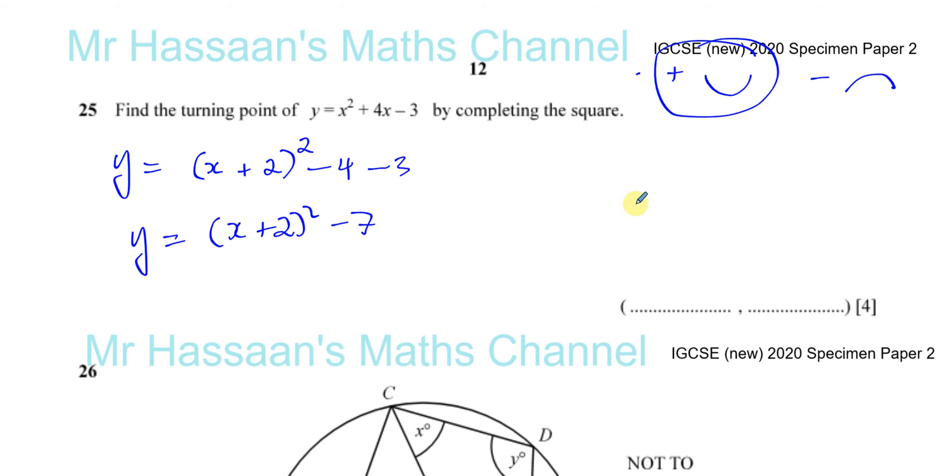It will be the lowest value that it can possibly take. Looking at this expression, the lowest value y can ever be is minus 7. The reason is that x plus 2 squared—whatever happens in this bracket—is always going to be squared. Even if it's negative, it becomes positive when squared. So you have something positive minus 7, which will be higher than minus 7. The lowest value this can be is minus 7.